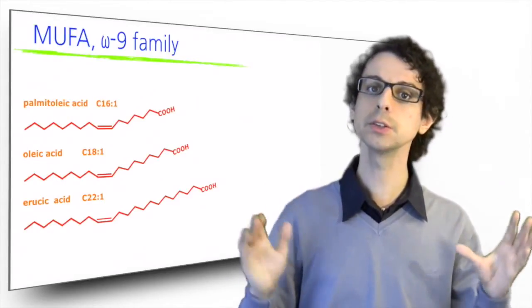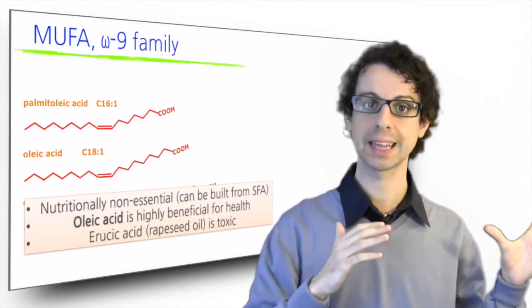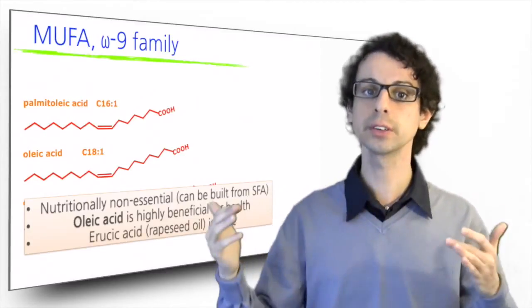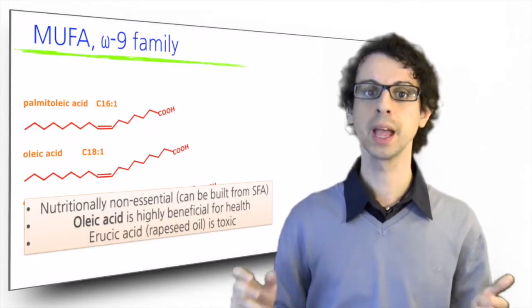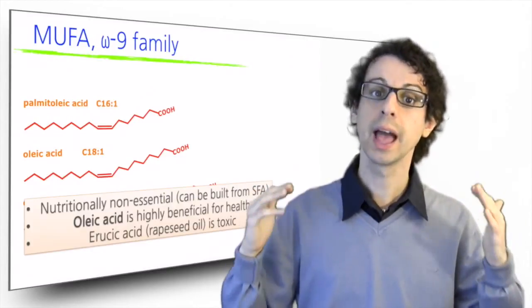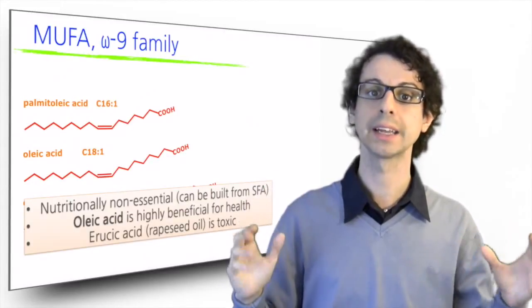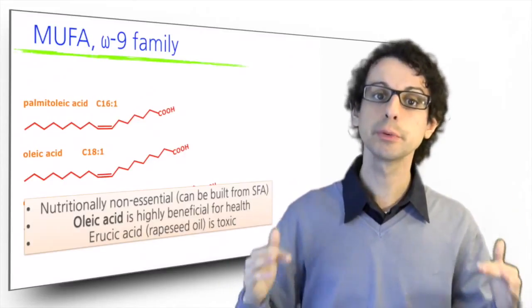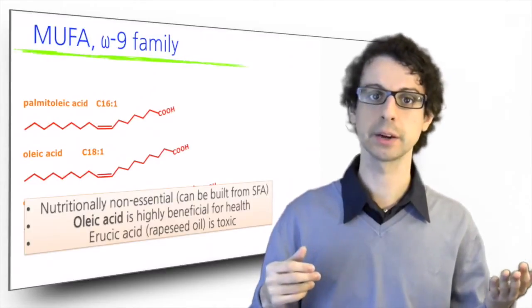Let's move on to the monounsaturated fats. They are also not nutritionally essential because they can be built from the corresponding saturated fatty acids of the same length. So for example, stearic C18 can be converted into oleic because our body can introduce the unsaturation in position 9. Even if they are not essential, however, we still should try to get them from food, and especially oleic acid, which is probably the best possible fatty acid in our diet, because it is very beneficial to our health. It lowers blood cholesterol, improves the HDL to LDL ratio in our bloodstream, again we will understand this better soon, and in general it exerts a protective action against cardiovascular disease.